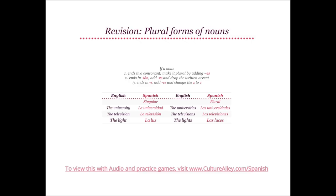If a noun ends in -ión, add -es and drop the written accent. As we saw, the television becomes la televisión and ends in -ión. Its plural form, the televisions, will become las televisiones — we added -es and dropped the accent mark. If a noun ends in Z, add -es and change the Z to C. For example, the light is la luz; hence the lights will be las luces. The Z gets replaced by C and -es is added at the end.